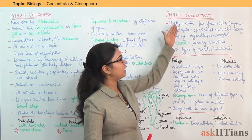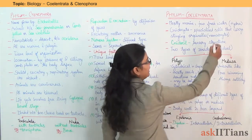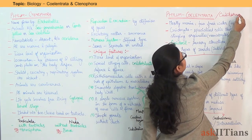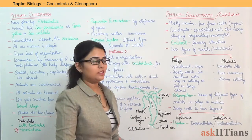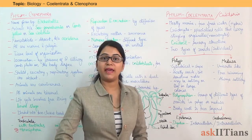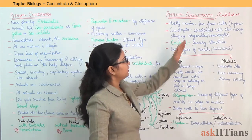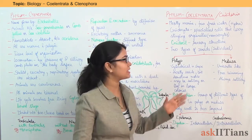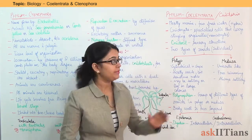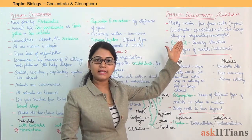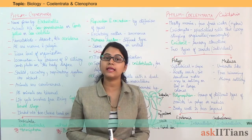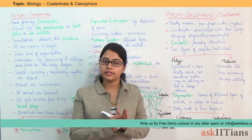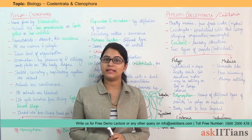First is Phylum Coelentrata, also known as Phylum Cnidaria. Under Phylum Coelentrata, they are mostly marine. A few of them are found in fresh water as coelenterates — for example, Hydra. Special cells called Cnidocytes are found in Phylum Coelentrata, and due to these Cnidocytes they have been given the name Cnidaria.